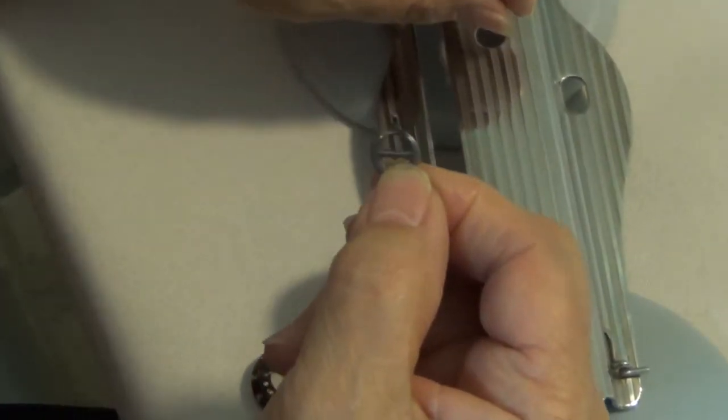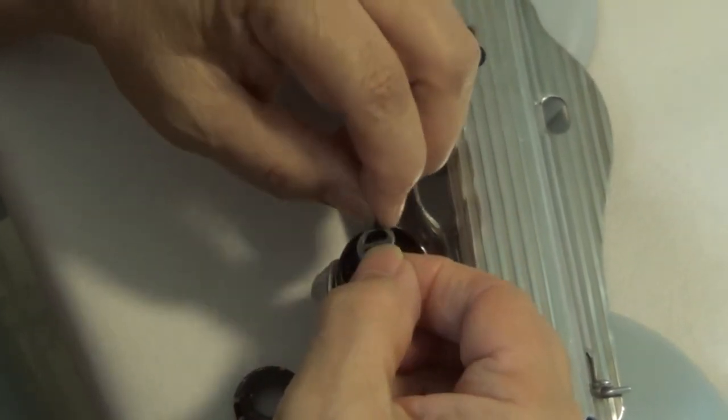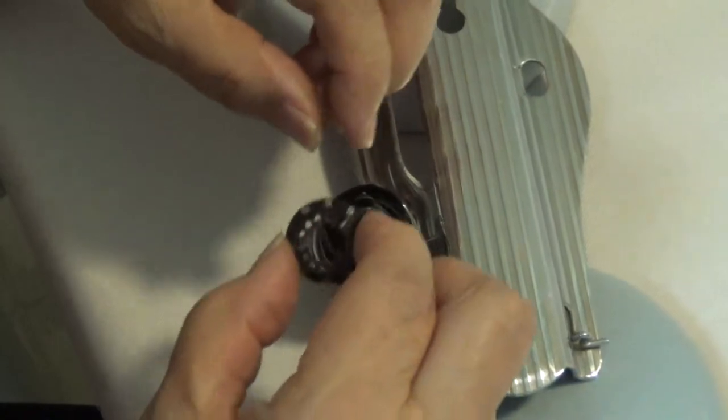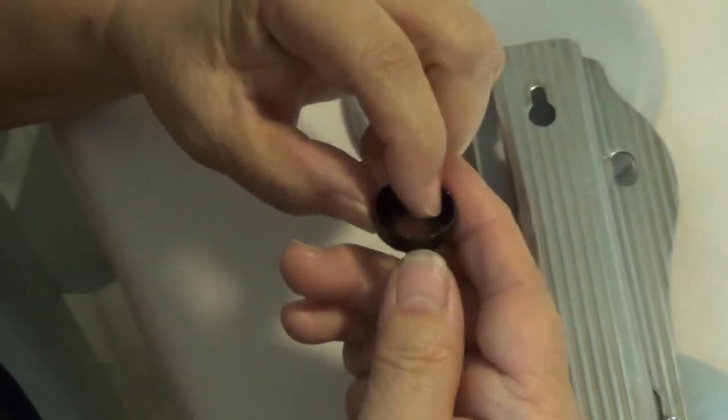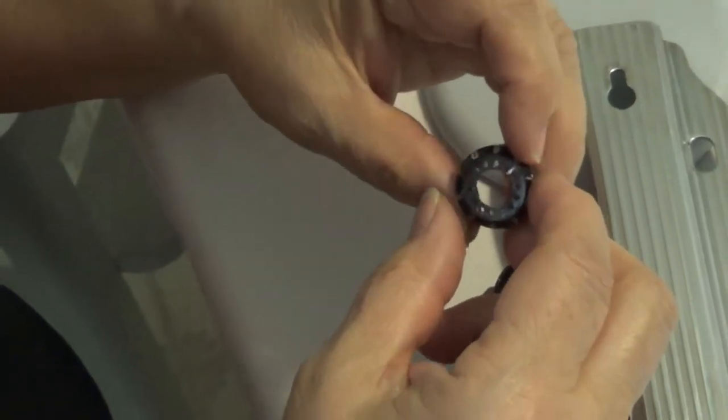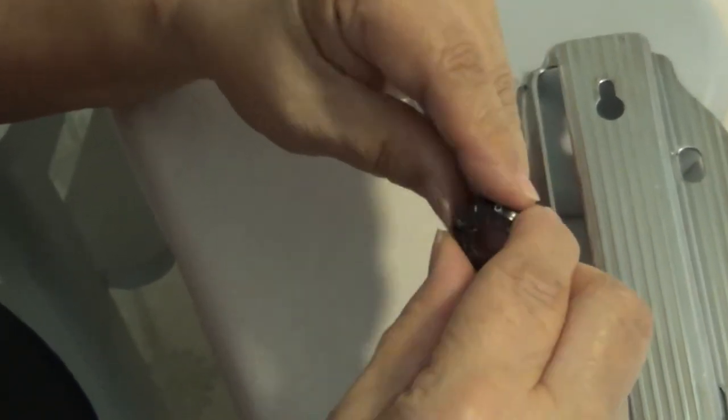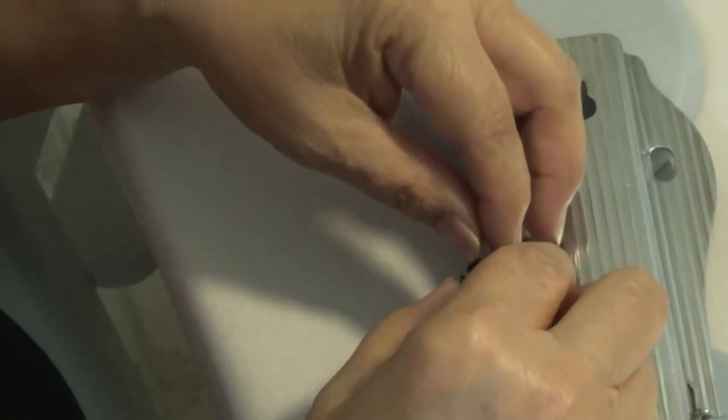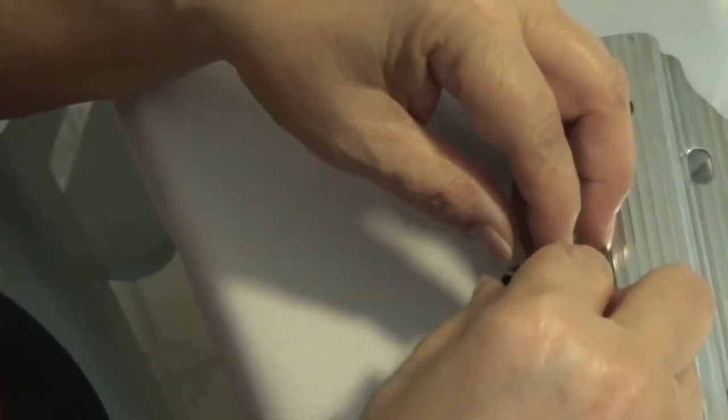You want to put the stop washer in next. And it will actually be stopped by a little protrusion on the inside of this dial indicator. Here's the number indicator, tension number indicator. Put it on next.